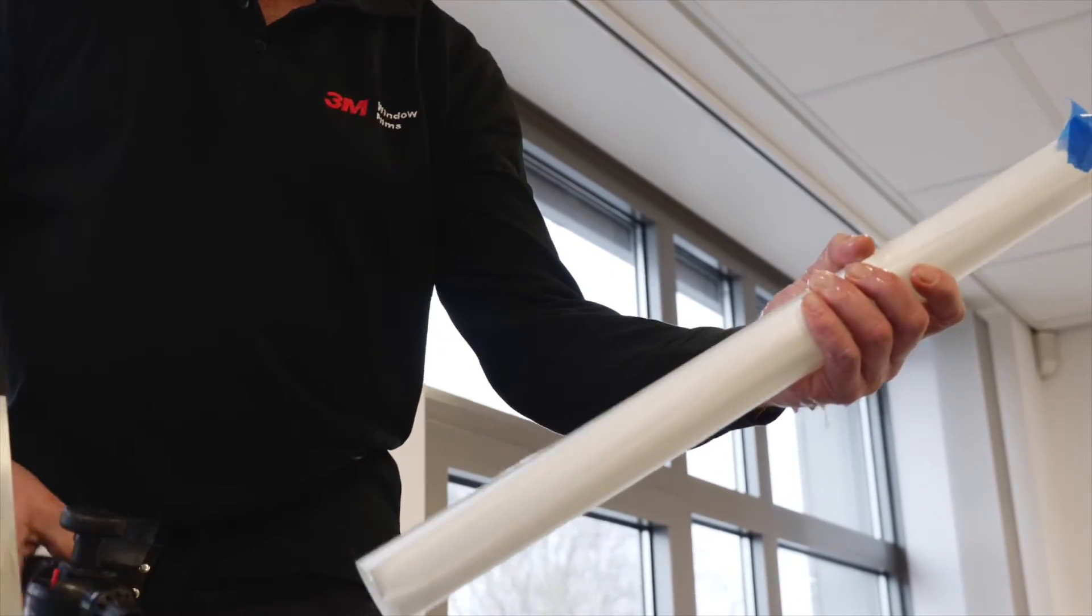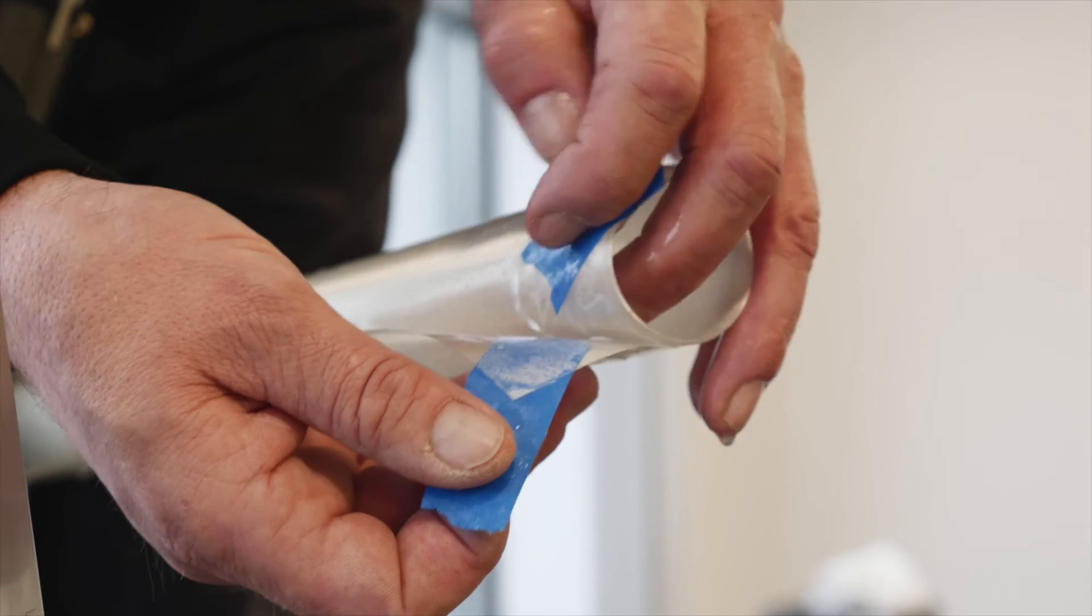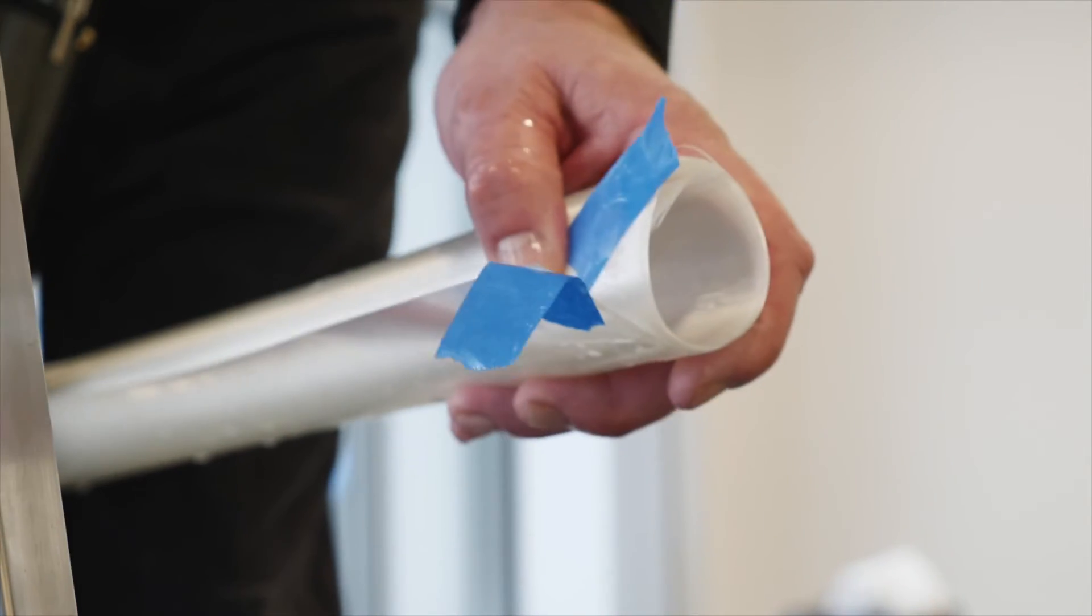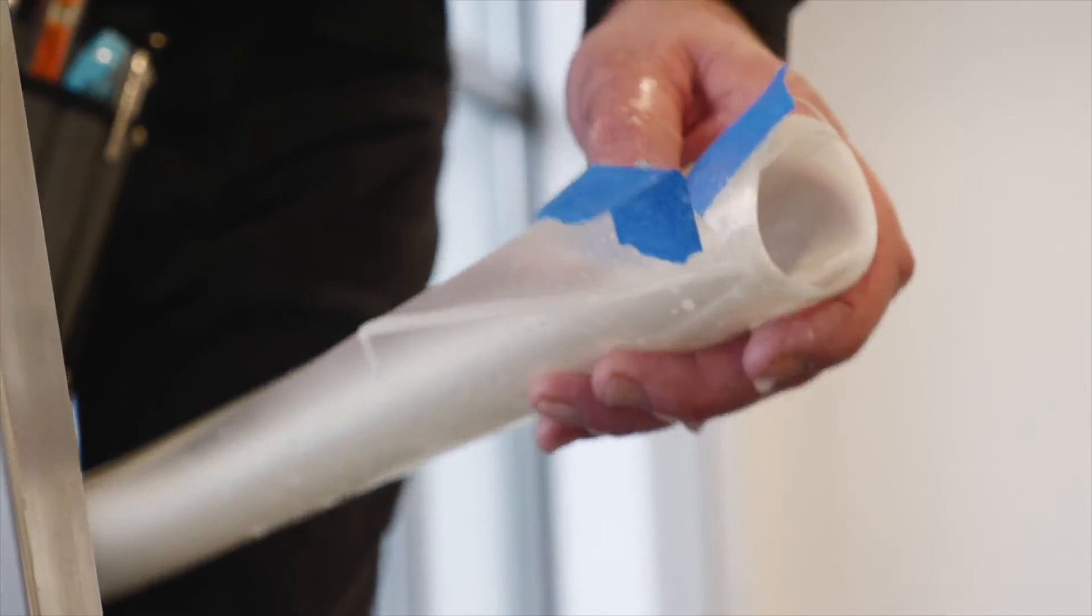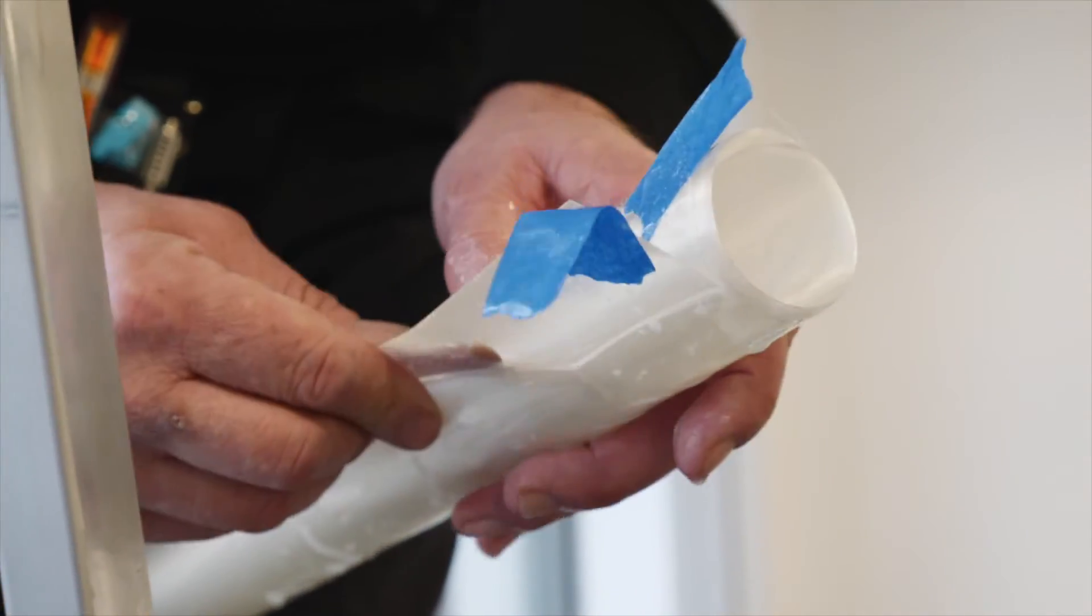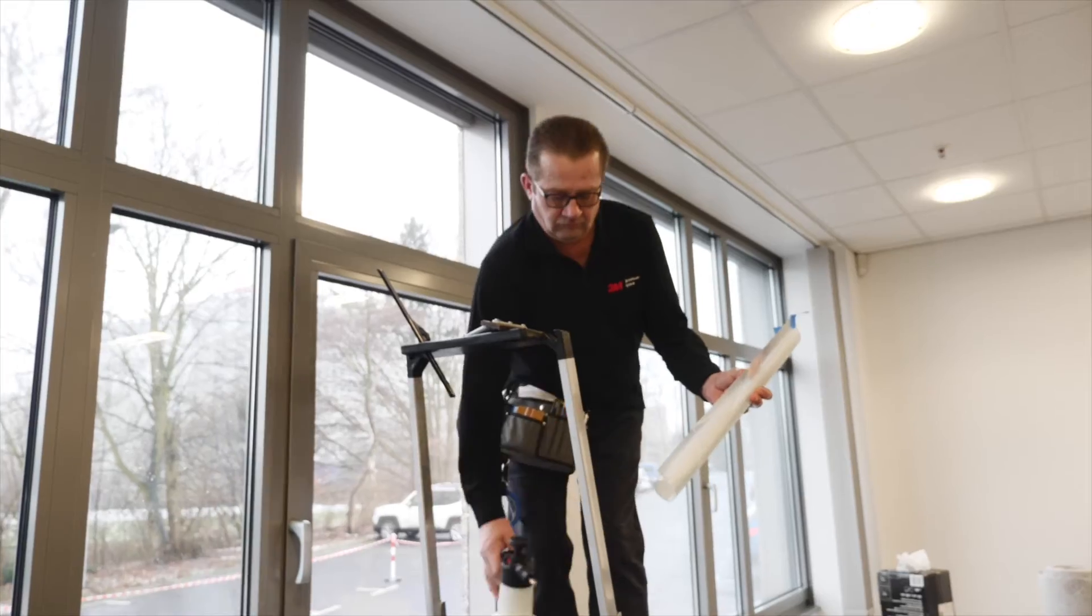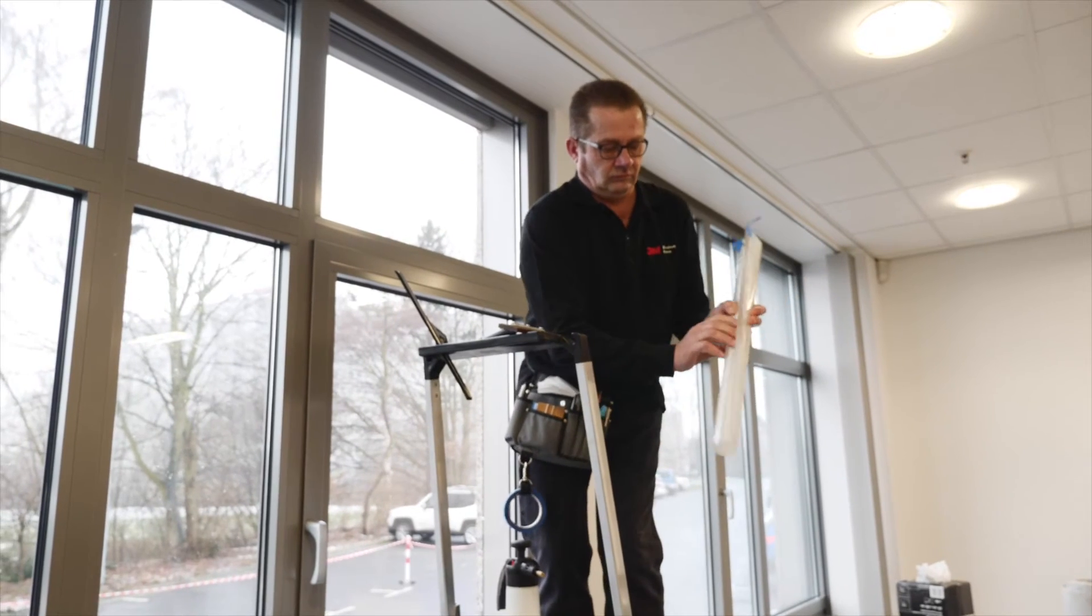Wet the roll again and with the help of the tape, start the separation of the liner from the film. Once you've done this, turn the roll over immediately to avoid dust being trapped between the window and film.